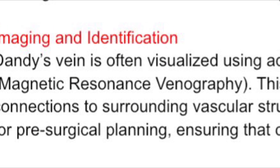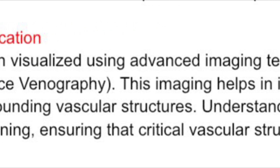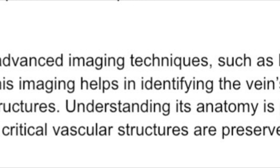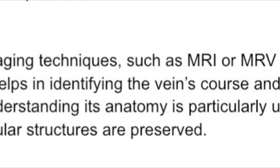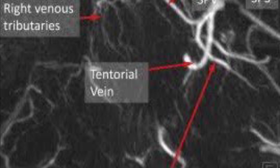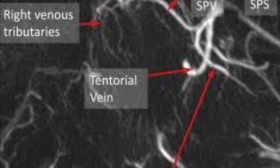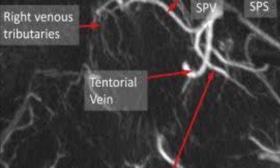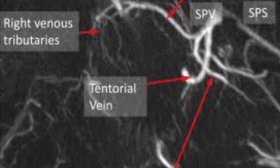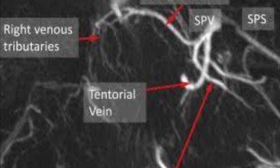Dandy's vein is often visualized using advanced imaging techniques, such as MRI or MRV, magnetic resonance venography. This imaging helps in identifying the vein's course and its connections to surrounding vascular structures. Understanding its anatomy is particularly useful for pre-surgical planning, ensuring that critical vascular structures are preserved.